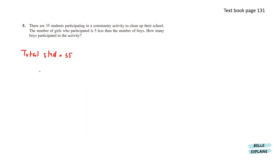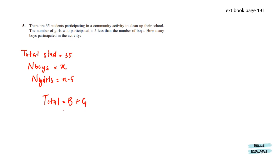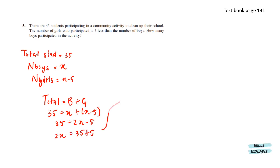Let's move on to number 5. There are 35 students participating in a community activity to clean up their school. The number of girls is 5 less than the number of boys, so boys equals x and girls equals x minus 5. To find how many boys participated, we form an equation: boys plus girls equals 35, which gives us x equals 20 boys.